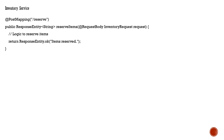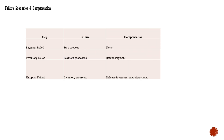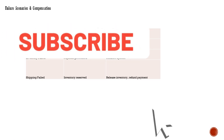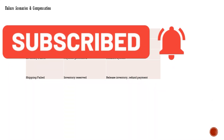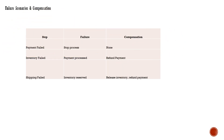Each individual service contains its own logic. The payment service accepts the payment and returns a success response. The inventory service reserves items and returns a confirmation. The shipping service takes the shipping order details, performs the shipping logic, and returns a shipping-initiated response. In failure scenarios — for example if payment fails, the process stops with no compensation needed; but if inventory fails, the payment is rolled back and the amount is refunded.